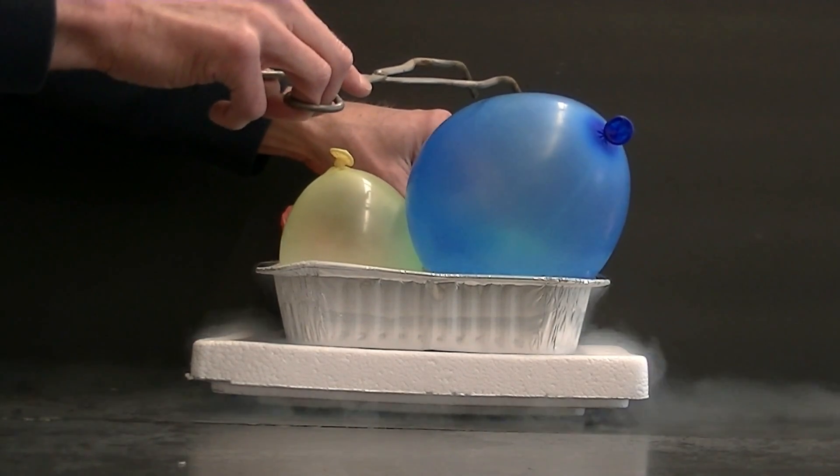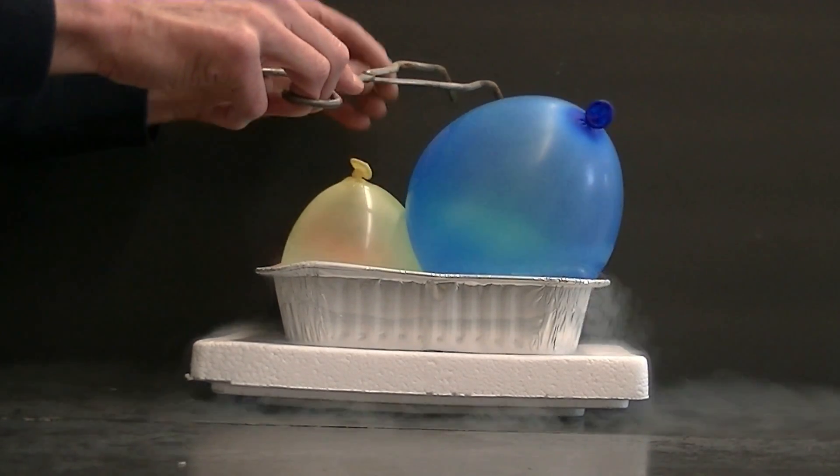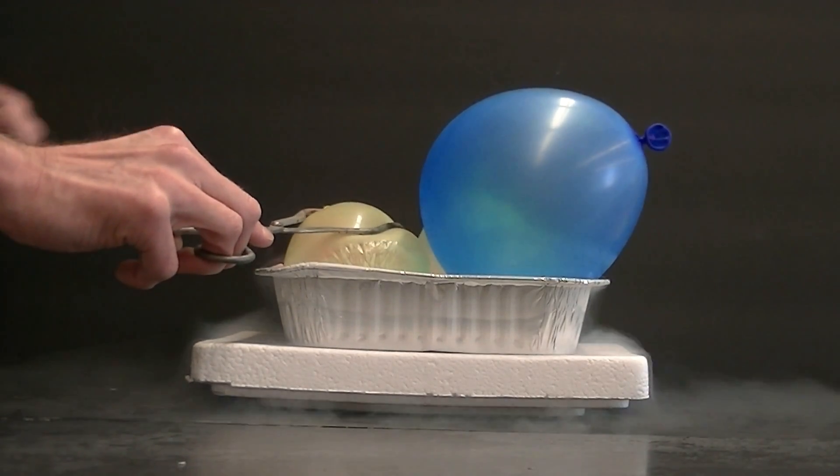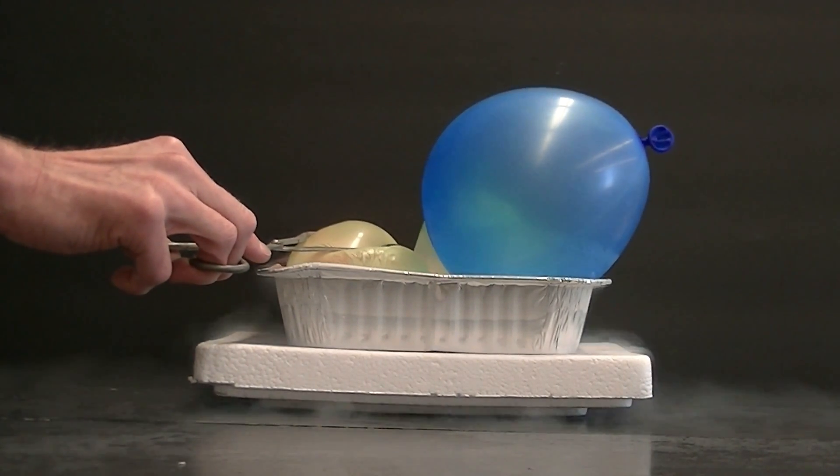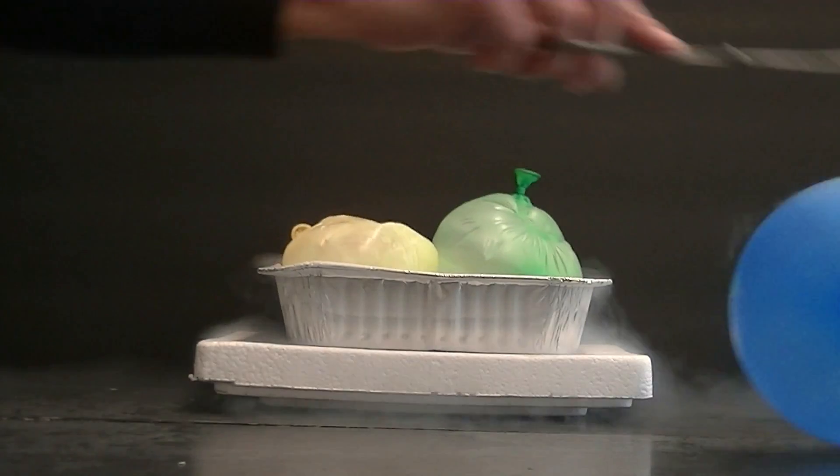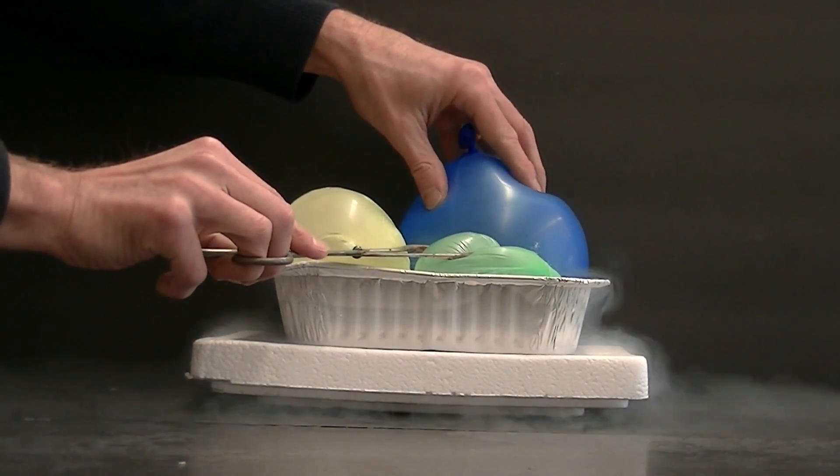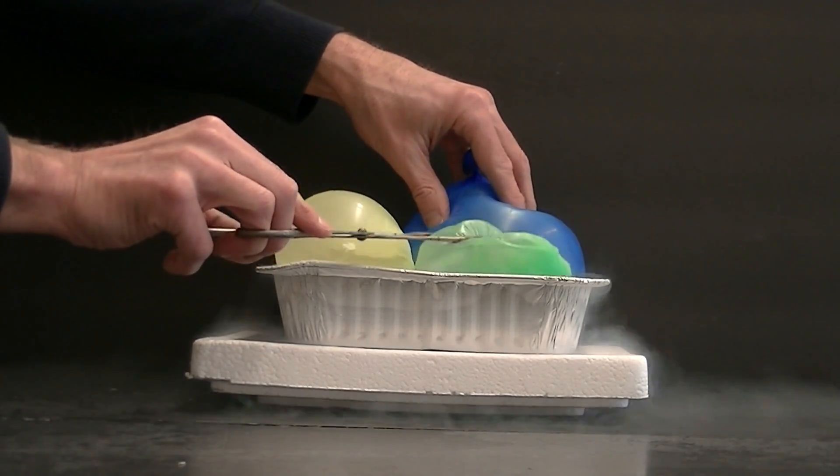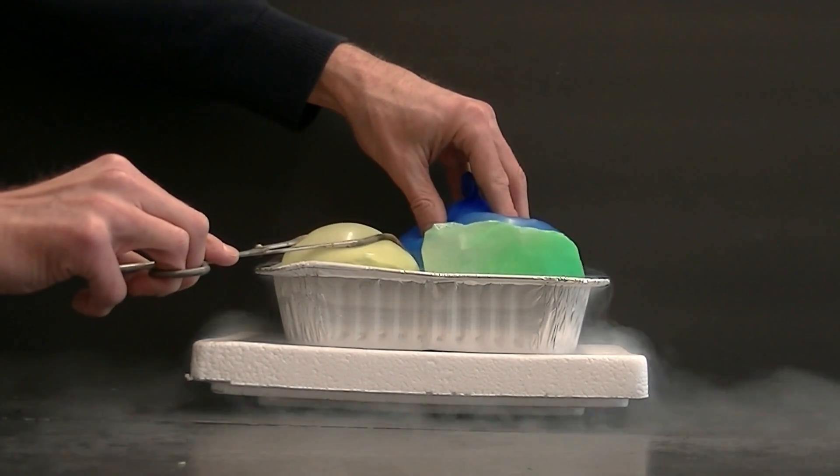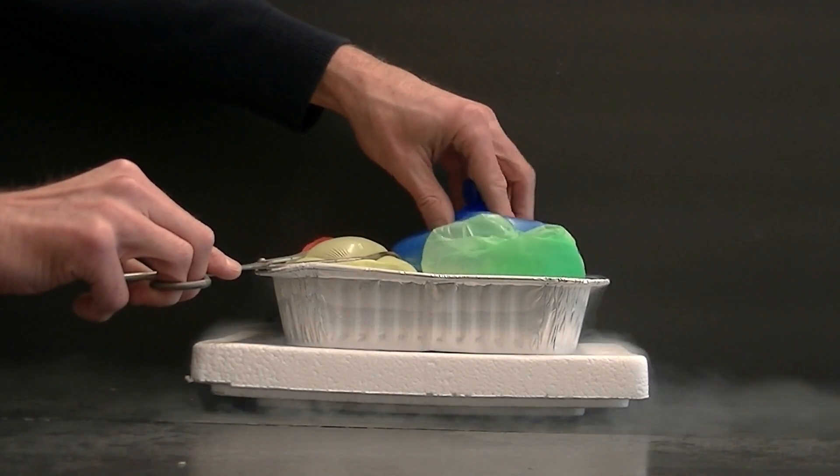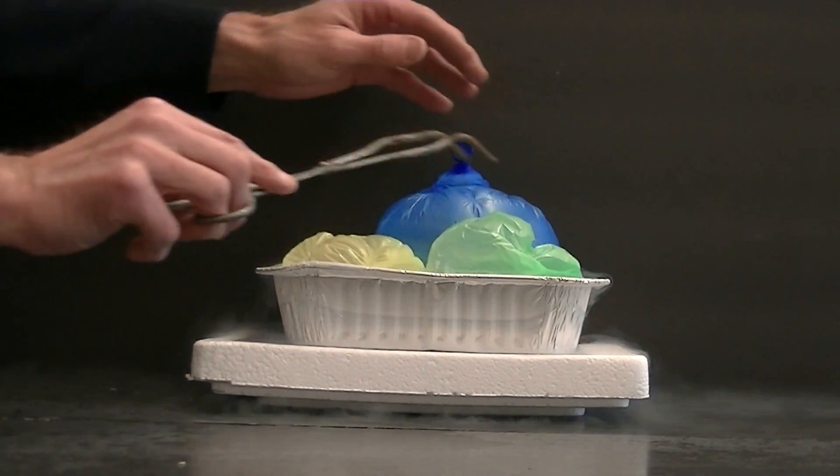So as the temperature of the balloon goes down, the volume of the balloon goes down. You can see these balloons shrink pretty substantially. The temperature of the gas goes down, the volume of the gas goes down. Hey, that's Charles' law, isn't it?